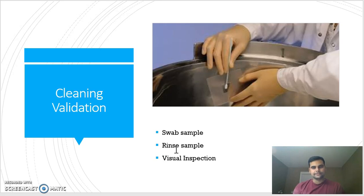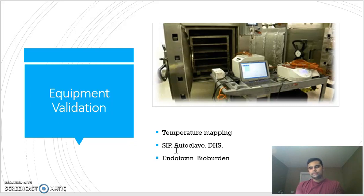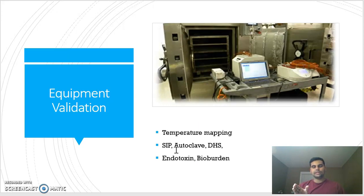For equipment validation, the industry uses different types of equipment such as autoclaves, dry heat sterilizers (DHS), sterilization in place (SIP) for big reactors, filter integrity testers, and lyophilizers. These all need to be validated to ensure they perform effectively. For example, an autoclave is specified to deliver heat for 25 minutes and maintain a temperature of 121 to 123 degrees Celsius through steam.